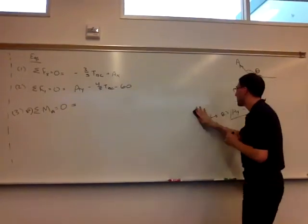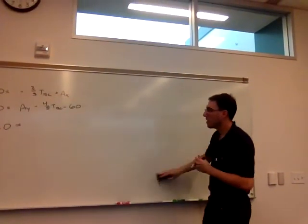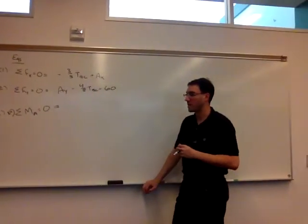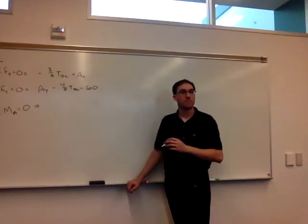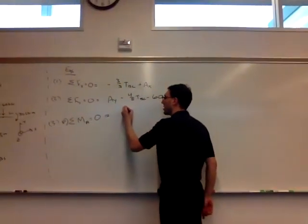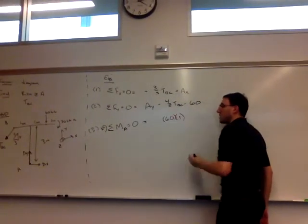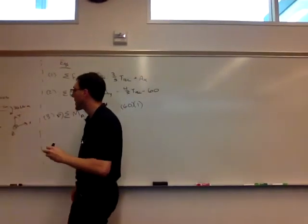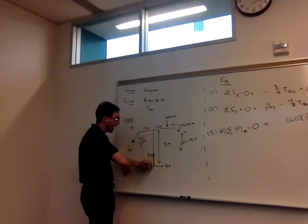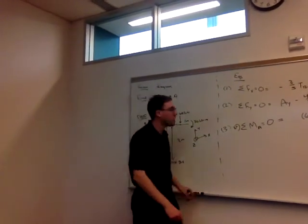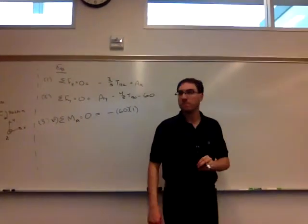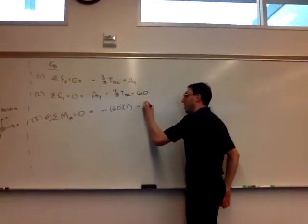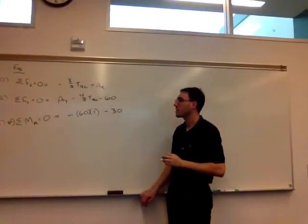So if we take the moment around the pin at A, what is our right-hand side going to be for this? A moment caused by that 60-Newton force, so a force of 60, a distance of 1, and it's going to be negative because around A, it's going to be causing a clockwise rotation about point A. So negative 60 times 1. What else is on the right-hand side? So that couple of 30, it's also clockwise, so negative.